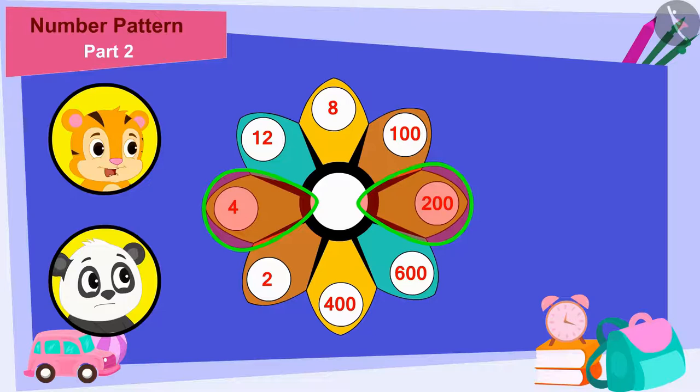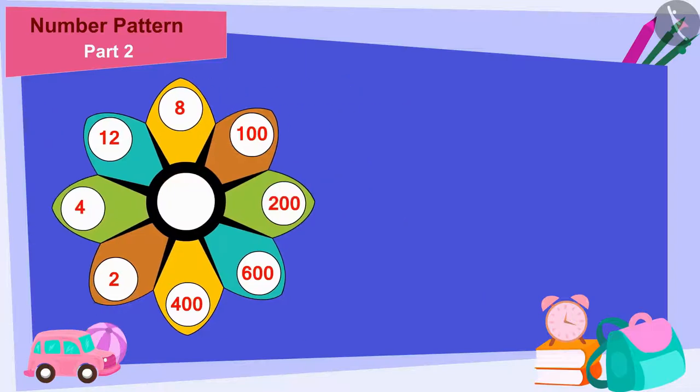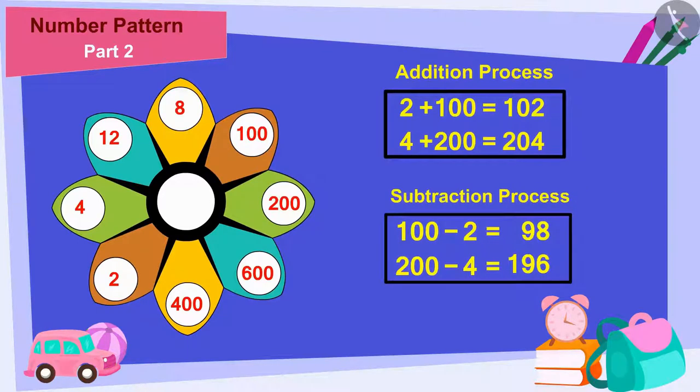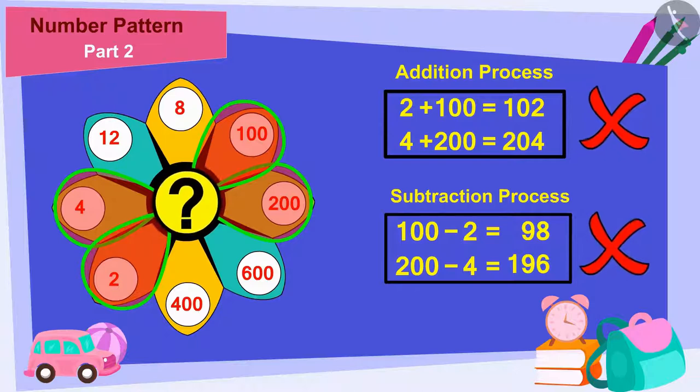And on this line, there is number 4 written on one end and 200 written on the other end. And the blank space is common between these two lines. If we use the addition and subtraction process, we cannot find any number that can be written in the common blank space of these two lines.